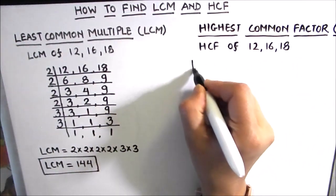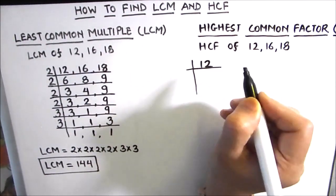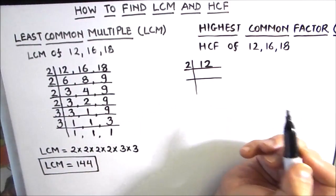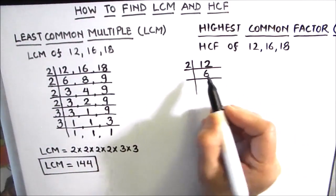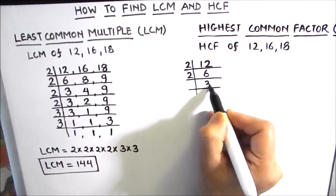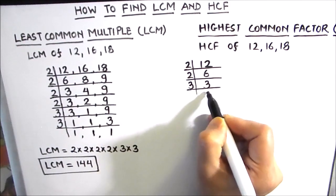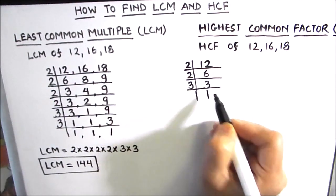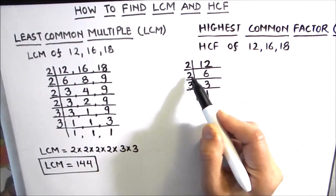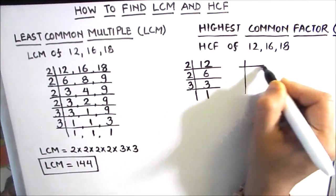For finding the HCF we first find the prime factors of each number separately using the prime factorization method. For 12: 2 times 6 is 12, 6 is divisible by 2, 2 times 3 is 6, and 3 is a prime number so 3 times 1 is 3. We now have the factors of 12 on the left-hand side of the ladder. Next we find the factors of 16.